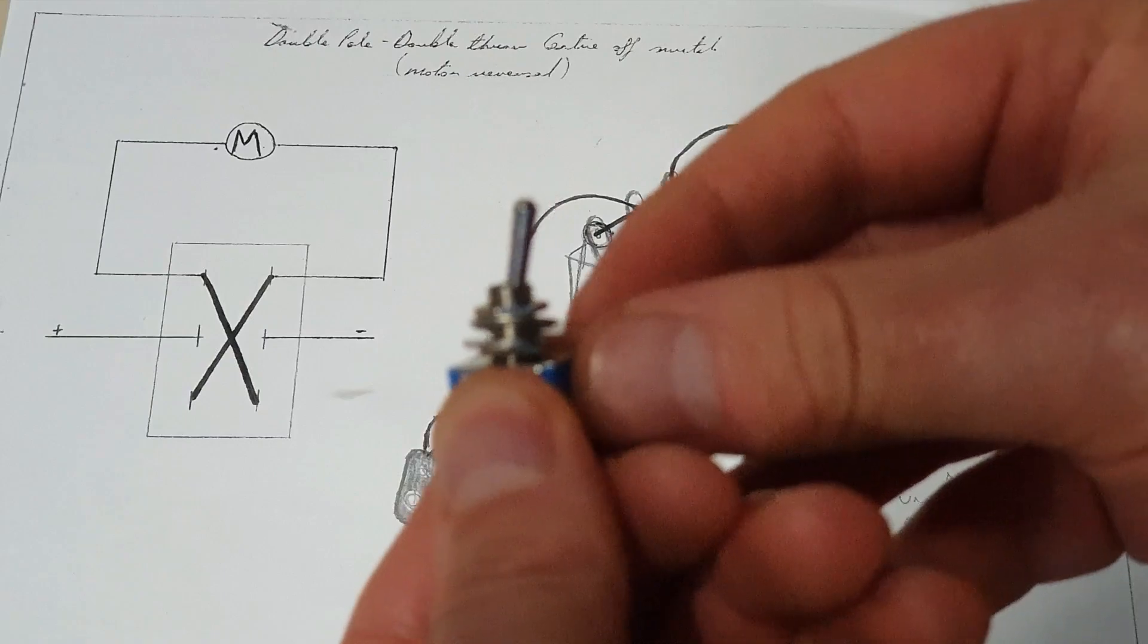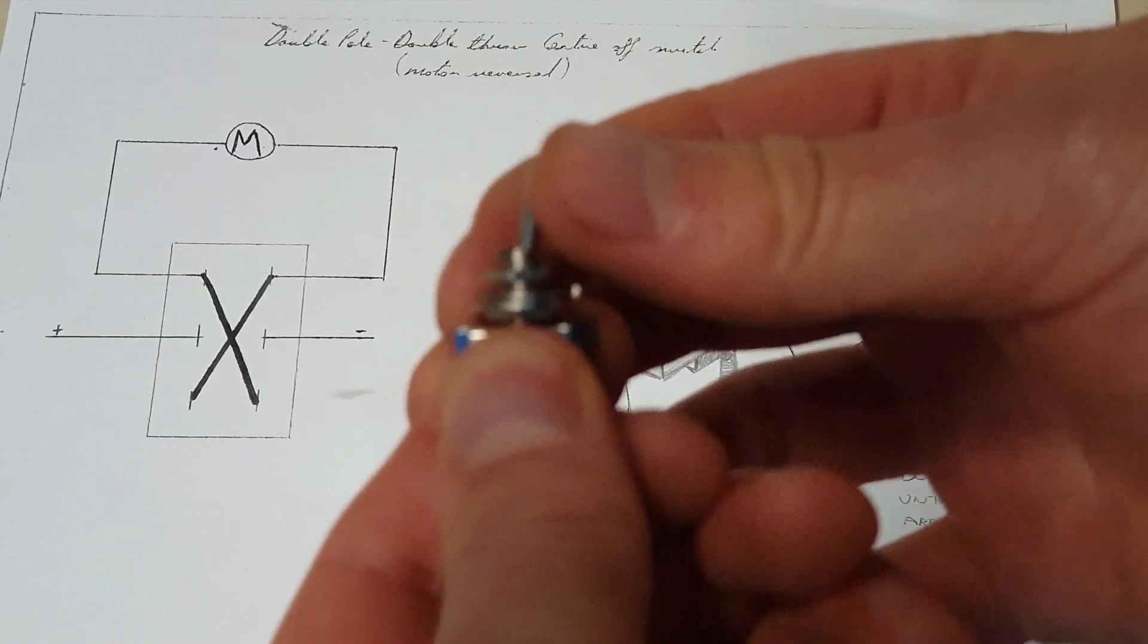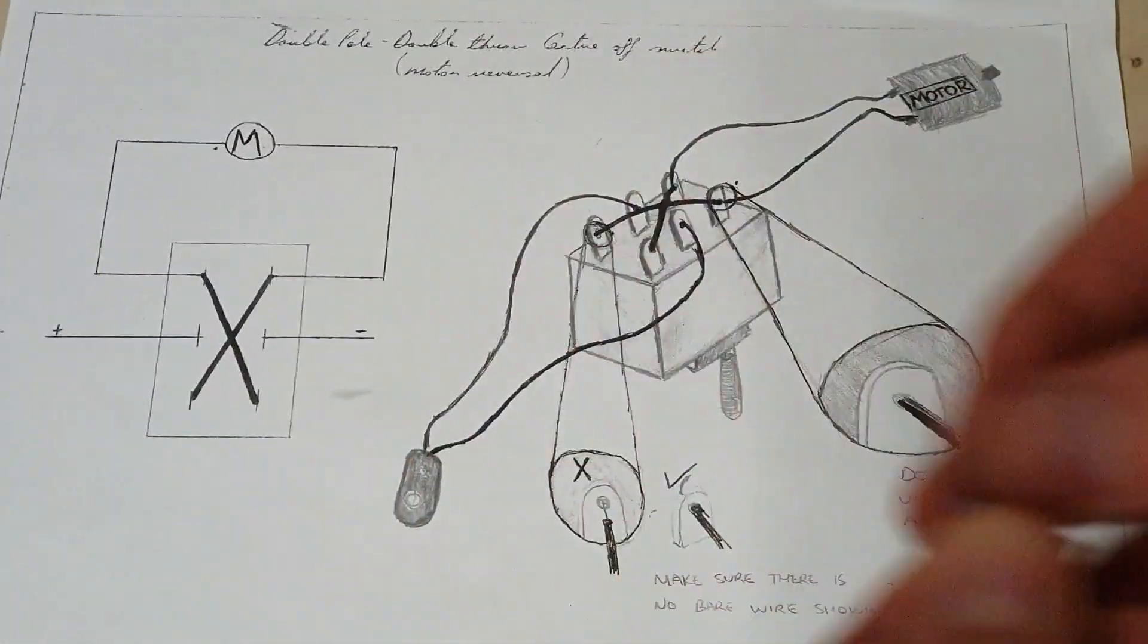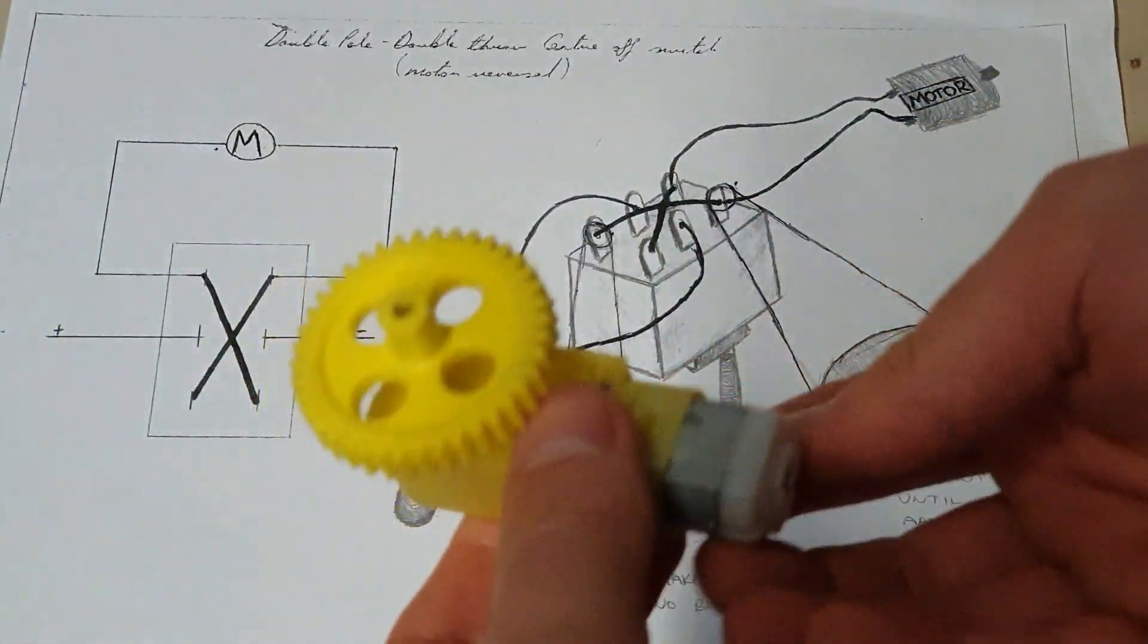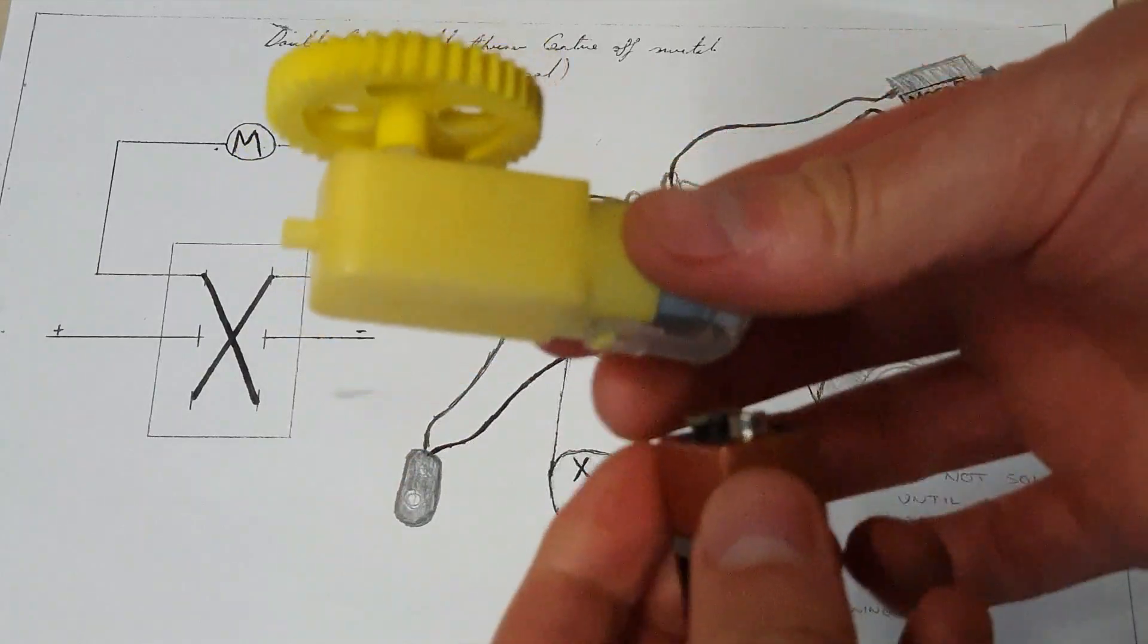If you flick it one direction, it goes one way. And if you flick it the opposite direction, it goes the other way. So if we look at a motor first of all here, here's your standard yellow motor. A lot of you will be familiar with that.